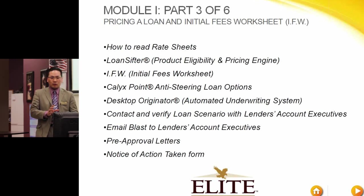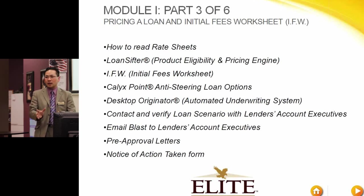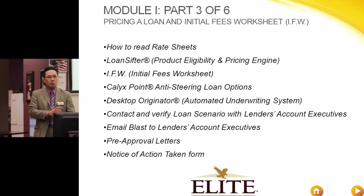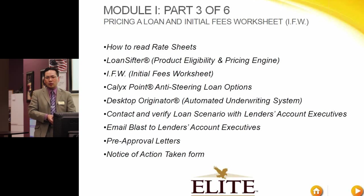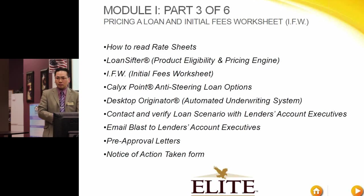With any computer system, garbage in, garbage out - if you put something incorrectly into the system, or even the system administrator on the lender side puts it incorrectly, you want to double check it manually. The initial fee worksheet is probably the most extensive one out of all tonight. You need to learn how to do that, but we have made it simple for you. With a few clicks of the button, there are still a few things you need to learn how to do, such as checking your tax schedule for how many months of impounds for property tax along with homeowner insurance. The Calix Point anti-steering loan option is pretty simple - we kind of narrow it down to just one rate below that. Along with desktop originator, if you guys haven't already set up for that, I'm going to show you guys how to do that tonight. You'll need a credit card.